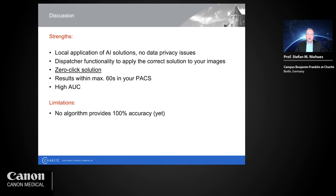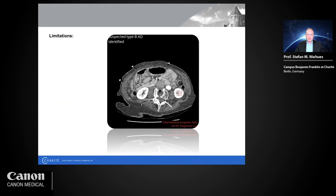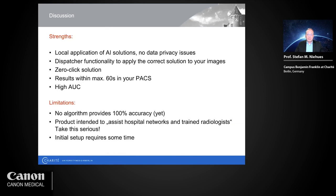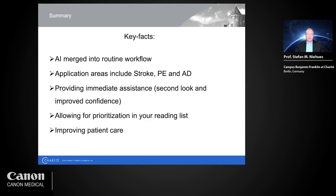Possible limitations: no algorithm currently has 100% accuracy, so there may be cases with false reports — for example, a type B aortic dissection incorrectly placed in the left kidney. Results must always be checked. This is intended to assist trained radiologists, not replace them. Initial setup may require some time. Key takeaway: AI has merged into clinical routine workflows. The automation platform provides immediate assistance for stroke, pulmonary embolism, and aortic dissection — the entities most critical to recognize fast.